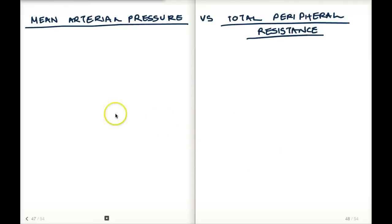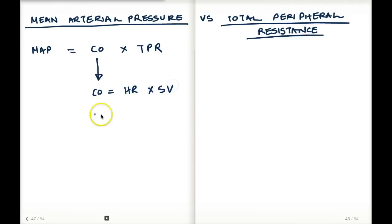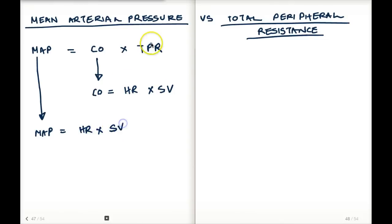Let's first talk about what equations we have to know. We know that mean arterial pressure is equal to cardiac output times total peripheral resistance. We also know that cardiac output is equal to heart rate times stroke volume. So mean arterial pressure equals heart rate times stroke volume, multiplied by total peripheral resistance.